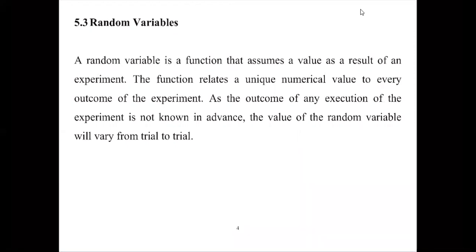A random variable is a function that assumes a value as a result of an experiment. For example, tossing a coin — it can land on heads or tails. If you toss a coin 10 times, the question could be how many heads do you get. The number of heads is a value resulting from an experiment, and we can call that X.